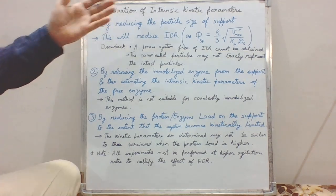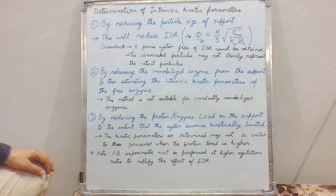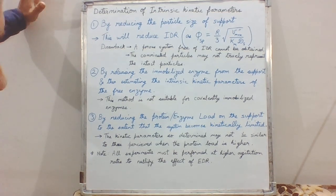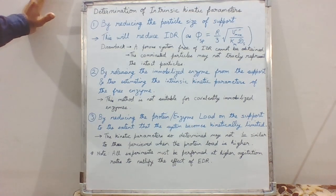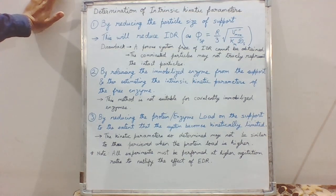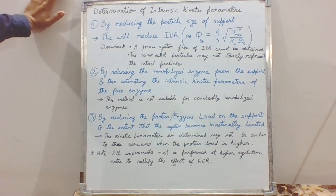The second strategy proposed is to release the immobilized enzyme from the support — that is, to de-immobilize the enzyme. We subject the immobilized enzyme to conditions under which it gets desorbed or released completely from the support, and then we estimate the kinetic parameters of that free enzyme. The concept here is that when we immobilize an enzyme, it may undergo certain structural changes, and if the enzyme is covalently immobilized, that introduces changes in the enzyme structure to a greater extent.